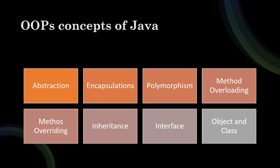Next is OOP concepts of Java. In many interviews, this is the favorite topic of the interviewer. They will ask you to tell them about the OOP concepts in Java. At that time, you have to tell them about abstraction, encapsulation, polymorphism, method overloading, method overriding, inheritance, interface, and objects and classes. These are the main concepts in OOP.